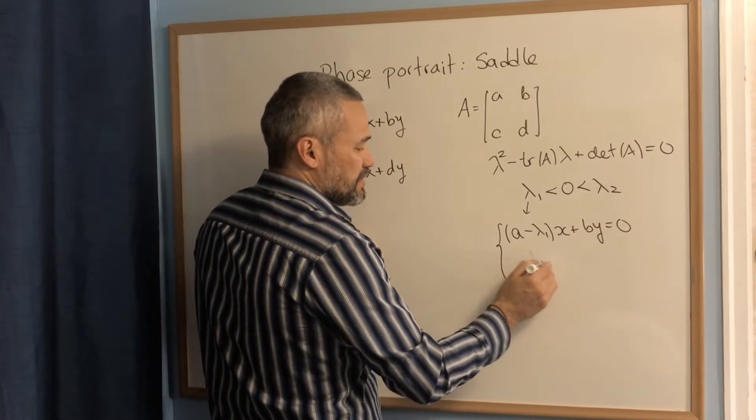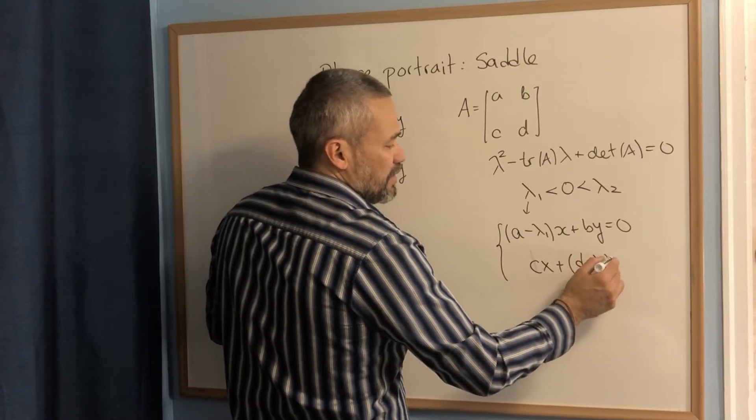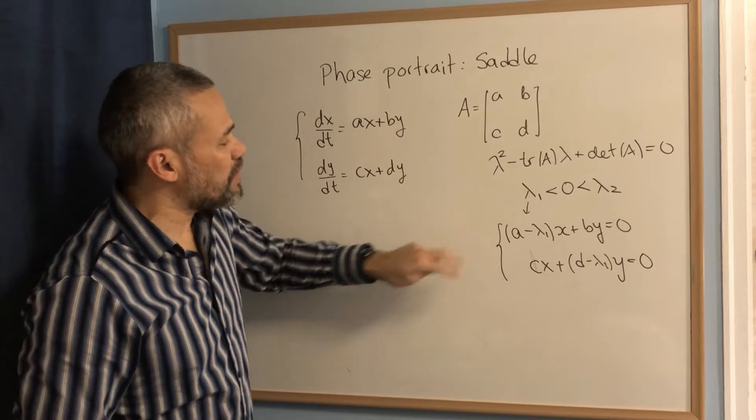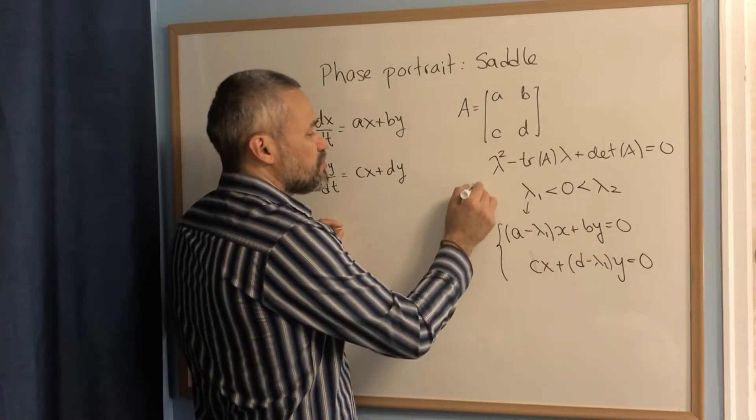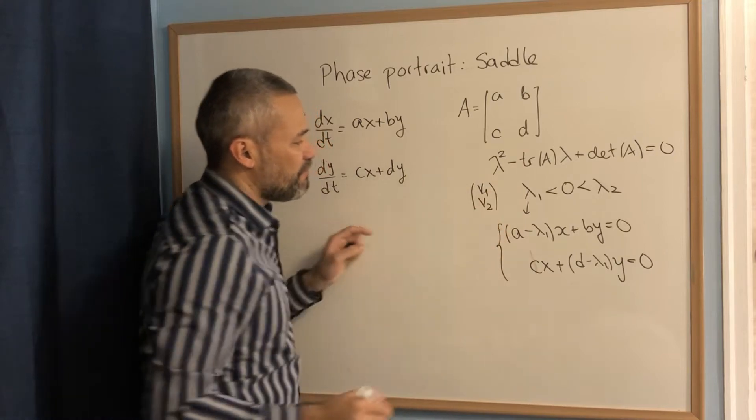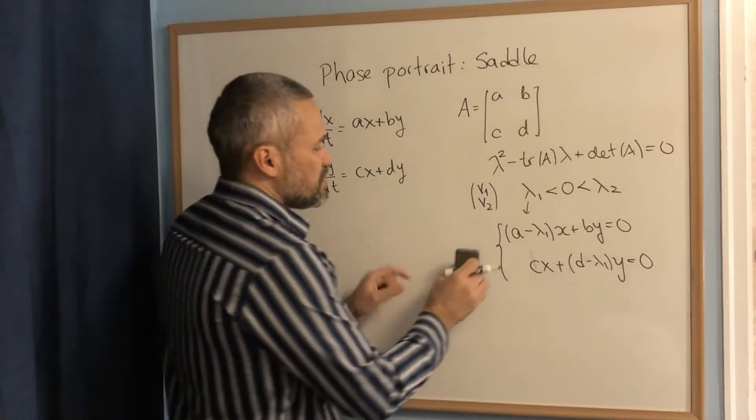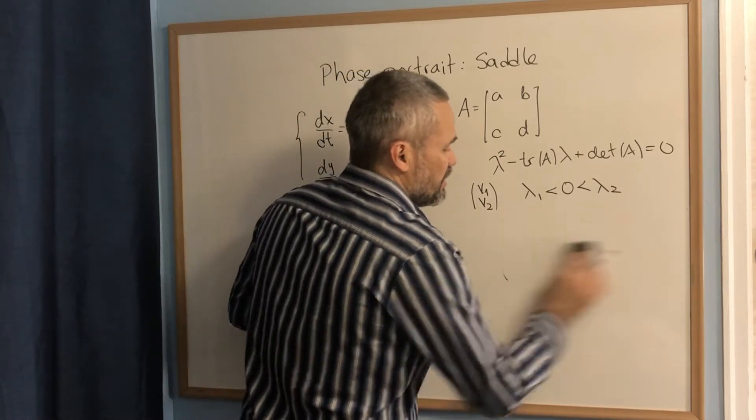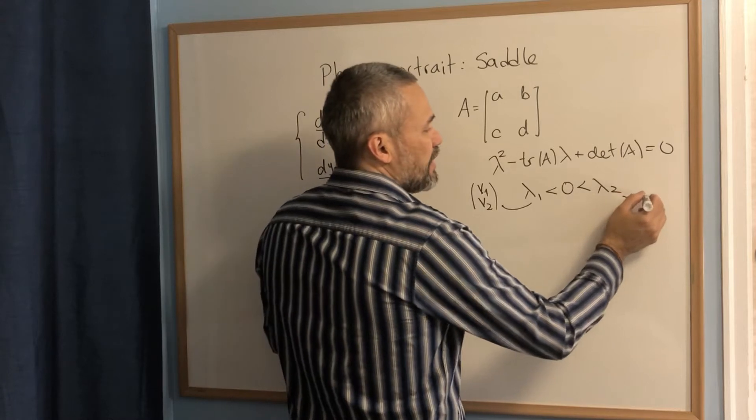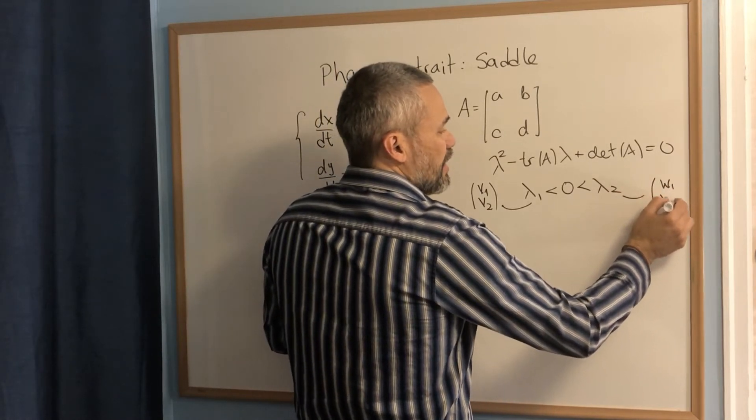Here is cx plus d minus lambda one times y equals zero. It is always possible to find a non-zero solution for both equations and we call that v1, v2. And that's the eigenvector associated with this eigenvalue lambda one. We also find the eigenvector associated with lambda two.